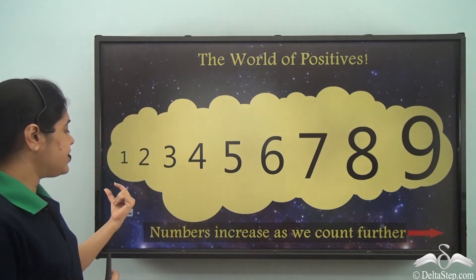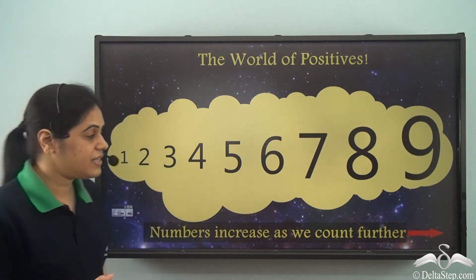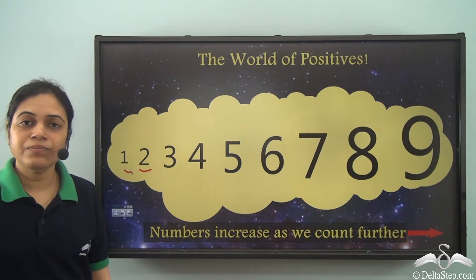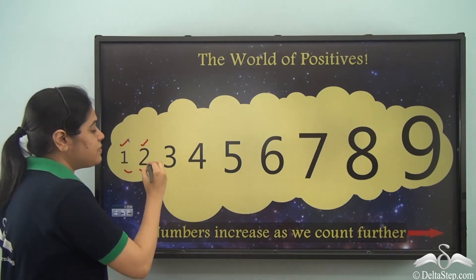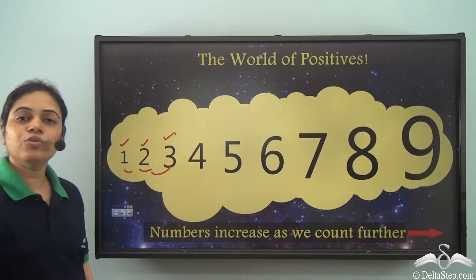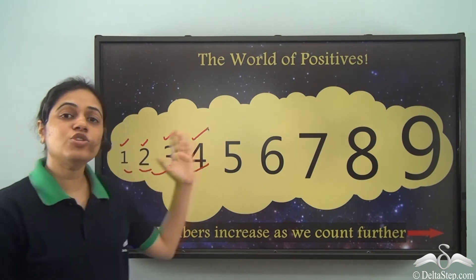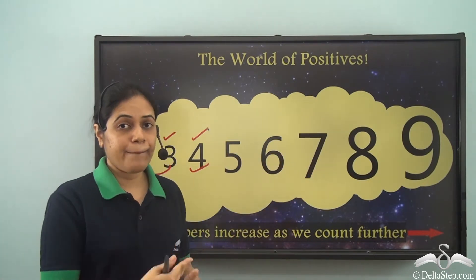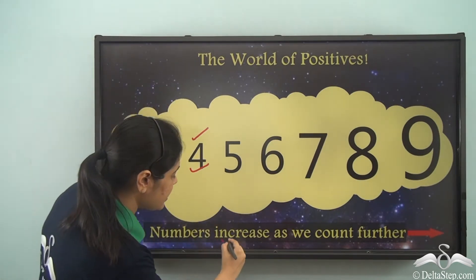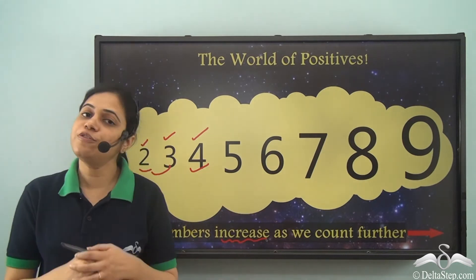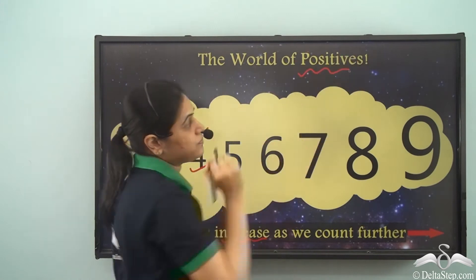As we count further, the numbers increase. 2 comes after 1, so 2 is greater than 1. 3 comes after 2, so 3 is greater than 2. 4 comes after 3, so 4 is greater than 3, and so on. The numbers which come later are bigger, so the numbers increase as we count further. But why is it called the world of positives?